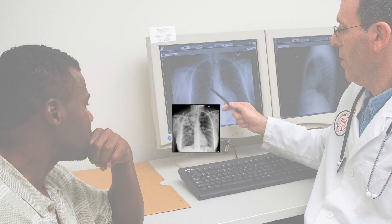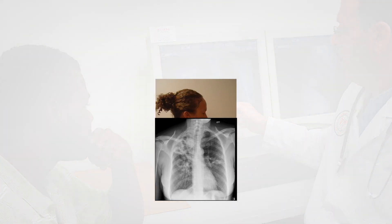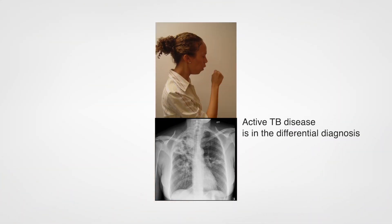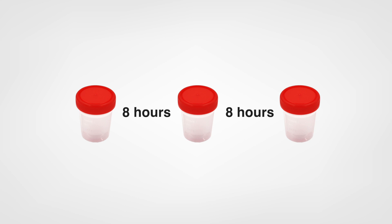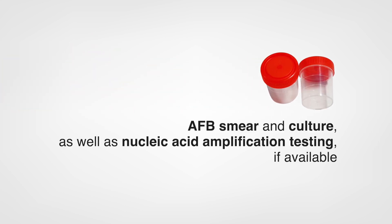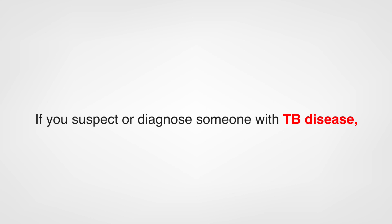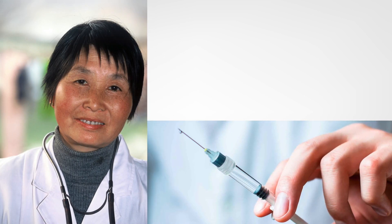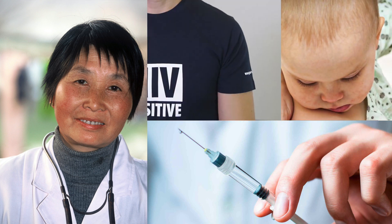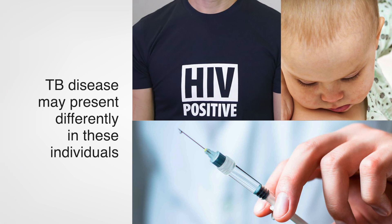If a person has either an abnormal chest radiograph or respiratory symptoms such as cough, and active TB disease is in the differential diagnosis, obtain at least three sputum samples for testing. Collect sputum samples at least eight hours apart; one should be collected in the early morning. Send the sputum samples for AFB smear and culture, as well as nucleic acid amplification testing if available. If you suspect or diagnose someone with TB disease, you must notify your local or state health department. Consult a TB expert for complex clinical situations, such as individuals on or about to start TNF-alpha inhibitors, or evaluation of children or people living with HIV, as TB disease may present differently in these individuals.